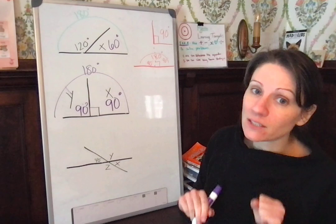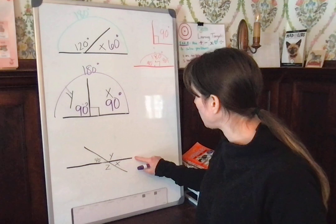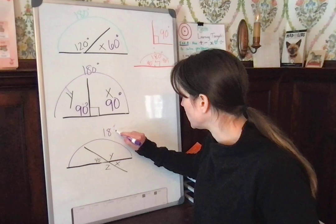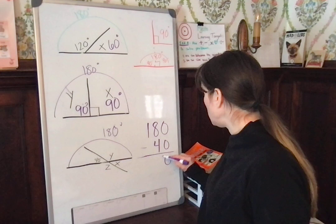Hence, my first step is, what's the easiest one to figure out for me right now? I have nothing really to go off of with z and x, but I do have this straight line, and I know a straight angle is 180 degrees. 180 degrees, and this little section is 40 degrees. So 180 minus the 40 that I already know about is going to leave me with 140 degrees.